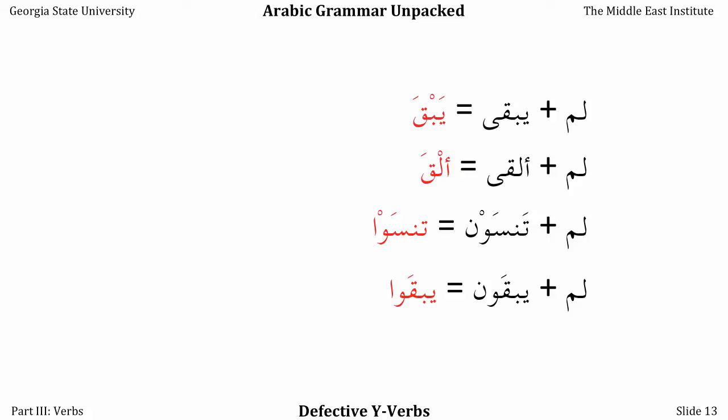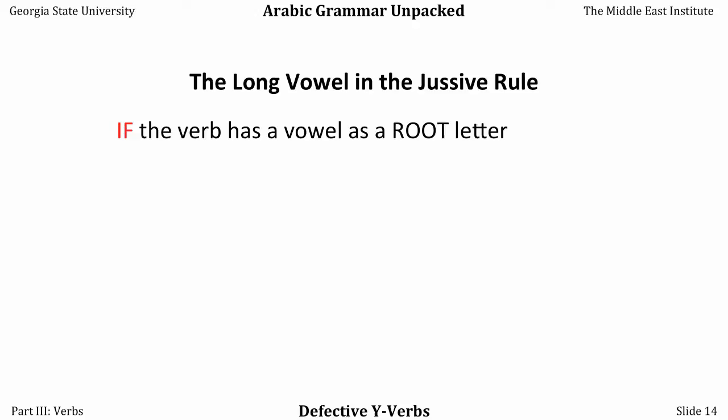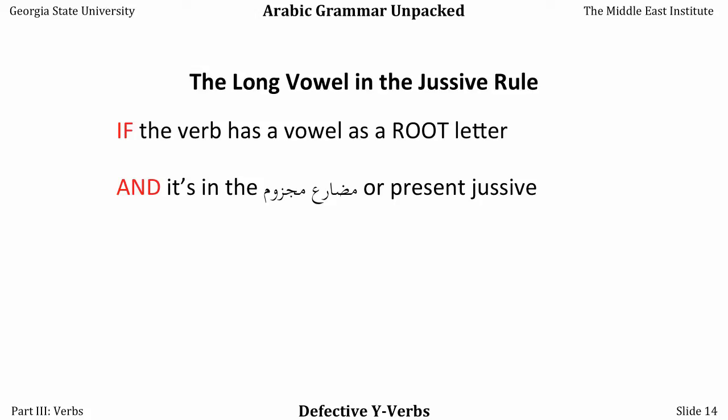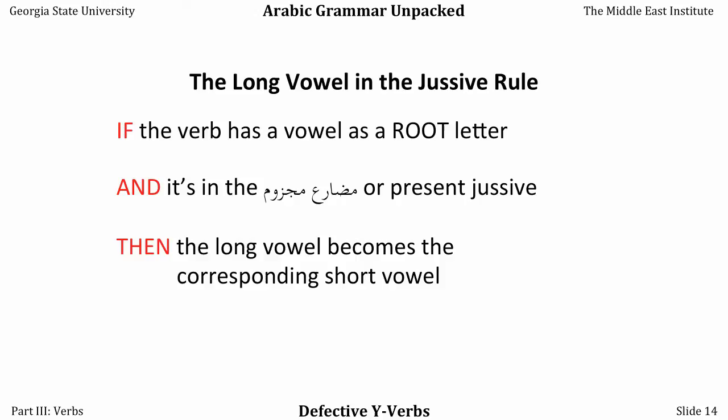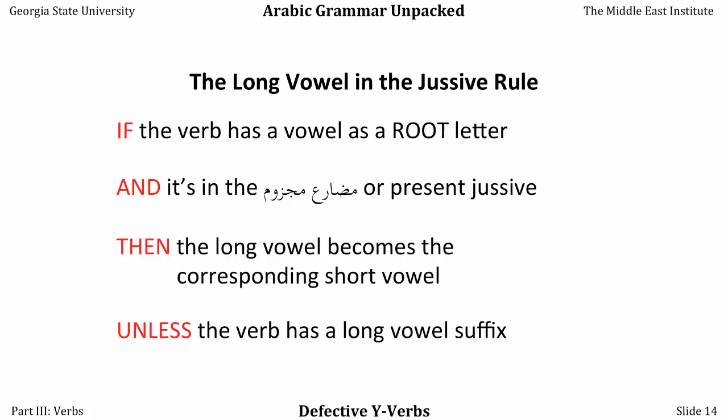Remember the long vowel in the jaazim rule: if the verb has a vowel as a root letter — which these all do, their final root letter is YA — and it's in the mudaari' majzoom, or present jaazim, which we use with lam and with commands, then the long vowel — the alif maqsura here — becomes the corresponding short vowel, that is fatha, unless the verb has a long vowel suffix. This rule is very difficult to internalize because it changes the spellings of verbs but doesn't really change their pronunciation very much. It's something you can get away with in speaking colloquial Arabic without using at all.